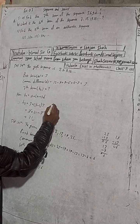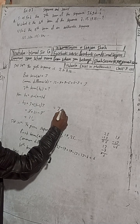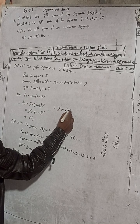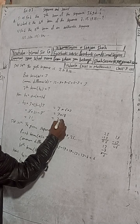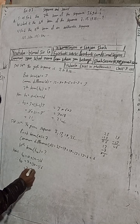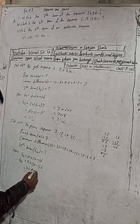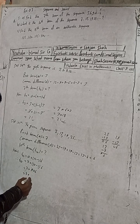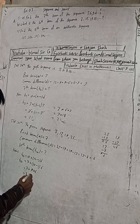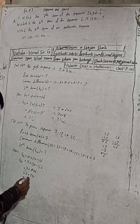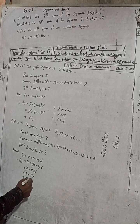Solving: 10 minus 1 is 9, and 9 × 6 = 54. Then 54 + 7 = 61. The answer is 61, which matches the answer in the book.